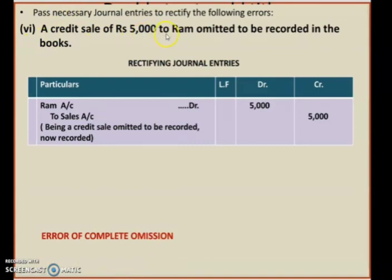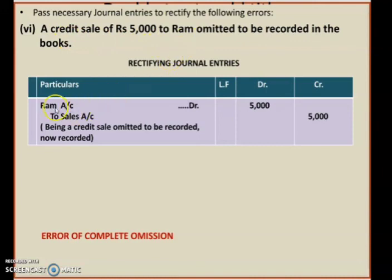Next: A credit sale of rupees 5000 to RAM omitted to be recorded in the books. This is an error of complete omission — they completely forgot about this transaction. You rectify it by simply passing the journal entry: RAM account debited to sales account, 5000, being a credit sale omitted to be recorded, now recorded. There is no need for a rectifying working note — just write the journal entry, as the entry was completely forgotten and is now being recorded.